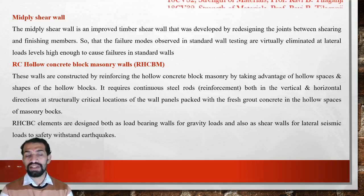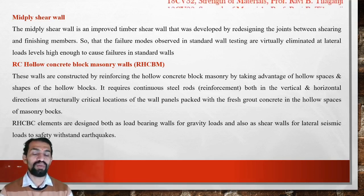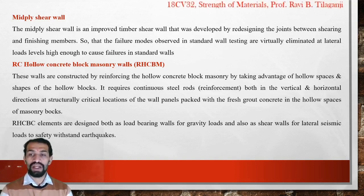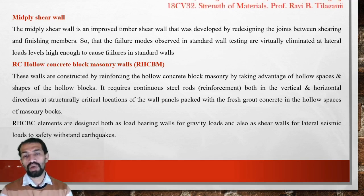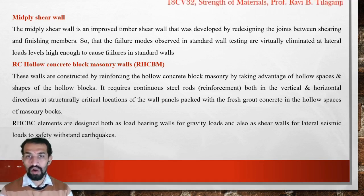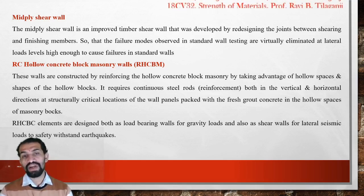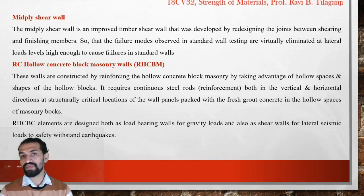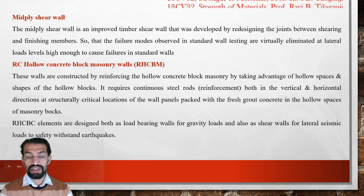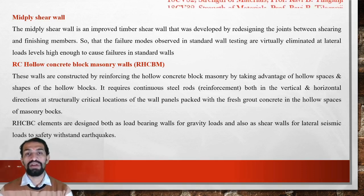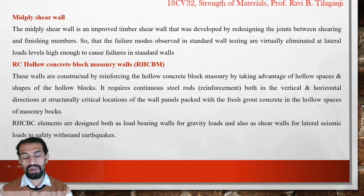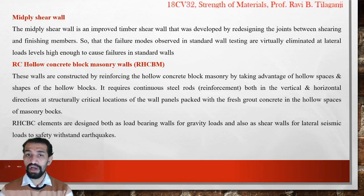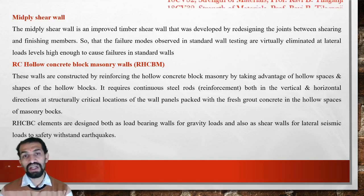RC hollow masonry walls use hollow concrete blocks. The advantage is that the block shapes are hollow, and they require continuous steel rods in both vertical and horizontal directions. The jointing part is reduced in hollow blocks compared to solid blocks. Concrete grouting is used at hollow spaces and horizontal surfaces so they can function as shear walls, resisting lateral and seismic loads, withstanding earthquakes, and reducing the dead load — that is gravity load — on the structure.